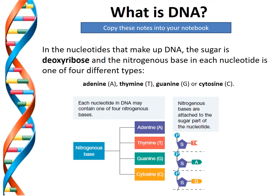In the nucleotides that make up DNA, the sugar is deoxyribose. The nitrogenous base in each nucleotide is one of four different types: adenine (A), thymine (T), guanine (G), or cytosine (C). Each nucleotide in DNA may contain one of these four nitrogenous bases.